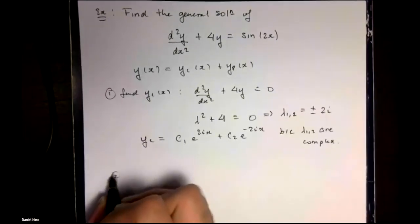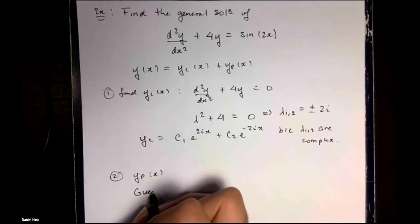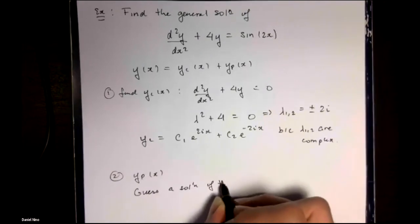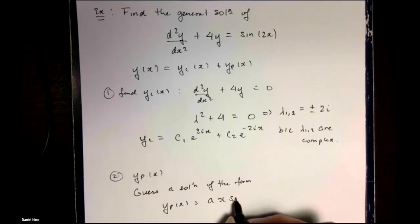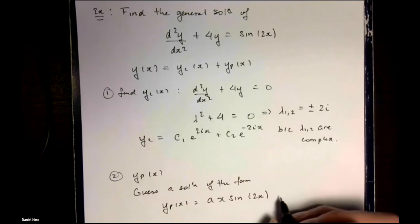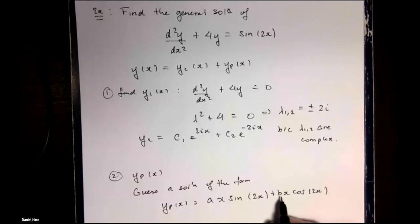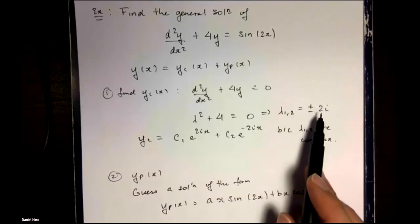When finding our particular solution according to our table, we guess a solution of the form ax sine 2x plus bx cosine 2x, where a and b are constants. From the table, the value of beta inside the argument of sine is the same as what we had for the roots of the auxiliary equation.